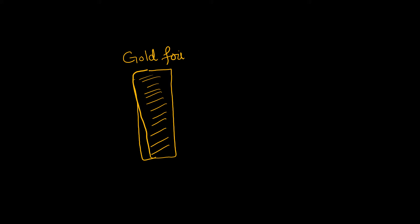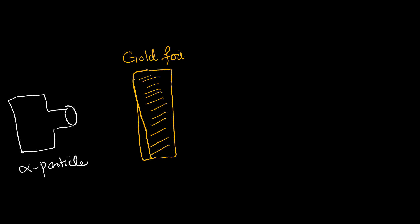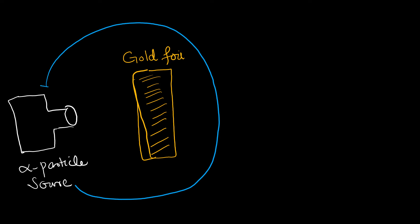Rutherford initially used a gold foil, which was a very thin layer of gold based on just a few atoms. He directed an alpha particle source at this gold foil. The gold foil was covered by a screen known as a phosphorescent or fluorescent screen, which is basically made up of phosphorus.